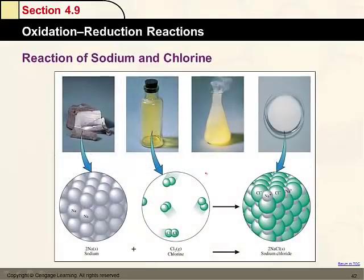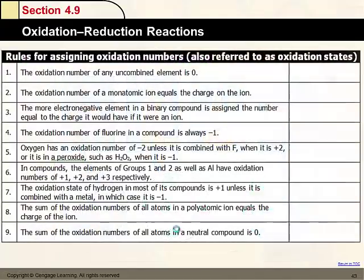Here's an example of a redox reaction: sodium metal reacting with chlorine gas. The reaction is quite violent, giving off heat and light, and it forms sodium chloride — table salt. This is a redox reaction where sodium and chlorine undergo a transfer of electrons. To understand whether something is oxidation or reduction, we have to look at the oxidation number.